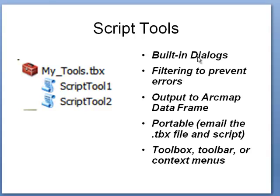The nice thing with Script Tools is it allows for filtering to prevent errors. For example, if your Python script requires a point feature class, you could specify in that dialog to only show the user point feature classes. The output from your Script Tool can go to your ArcMap data frame or table of contents. It's also portable — just email somebody your .tbx file, which is your toolbox, and all the Script Tools are inside that container. Script Tools can also be put in toolbars or context menus.